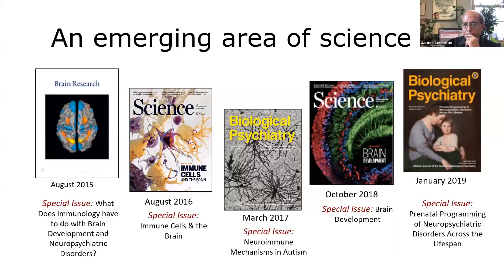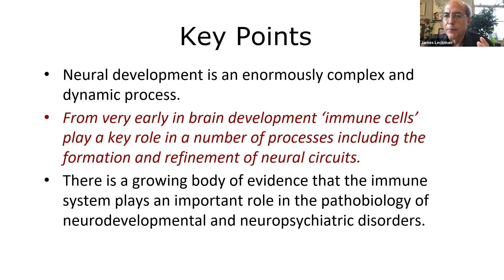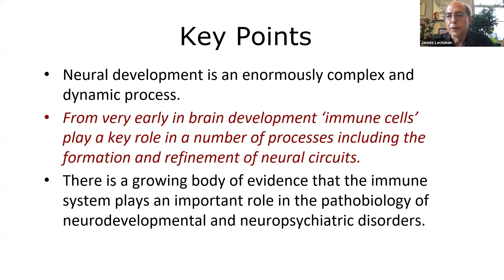Neural development is enormously complex and dynamic. What we've learned is that from the very early stages of brain development, immune cells play a key role in a number of processes, including the formation and refinement of neural circuits. The first thing we learned about the microglia is that they actually monitor how active the interconnection is between neurons, and if the interconnection isn't strong enough, those microglia go in and gobble up the connection — the synapse — so that there is a refinement of the circuitry. It's also clear now that those immune cells are playing an important role in the pathobiology and neural development of neuropsychiatric disorders.